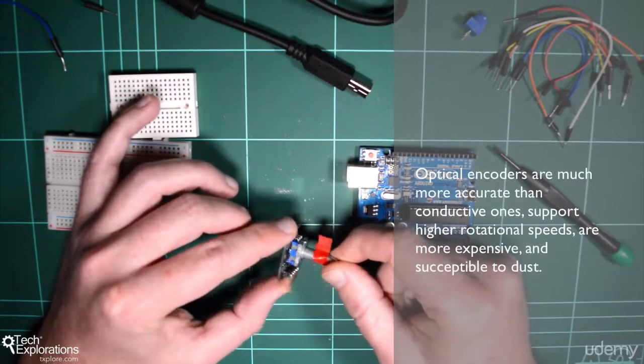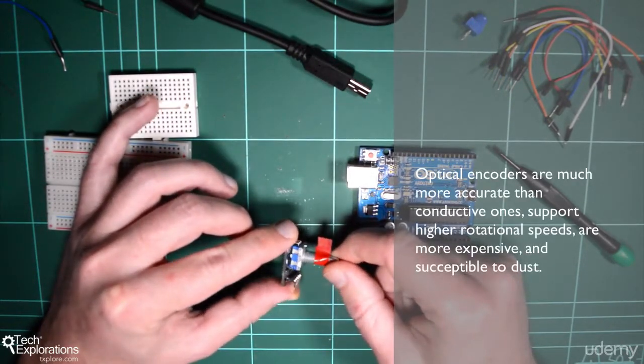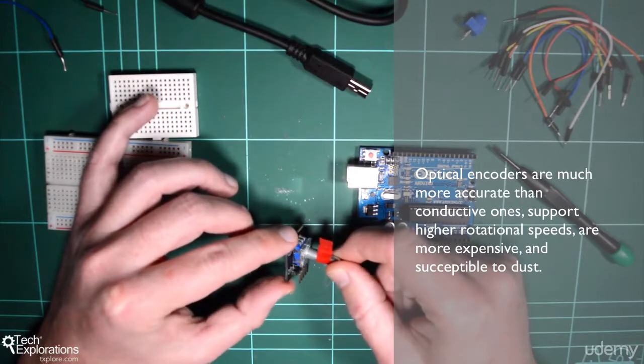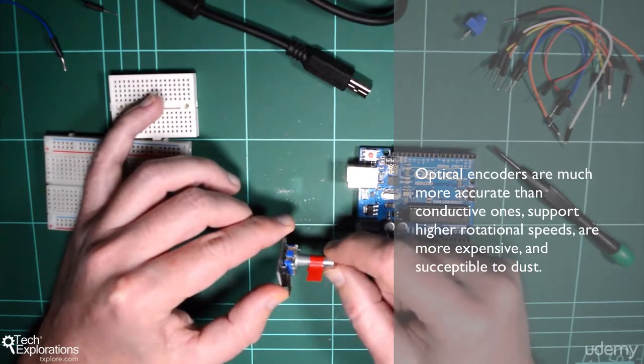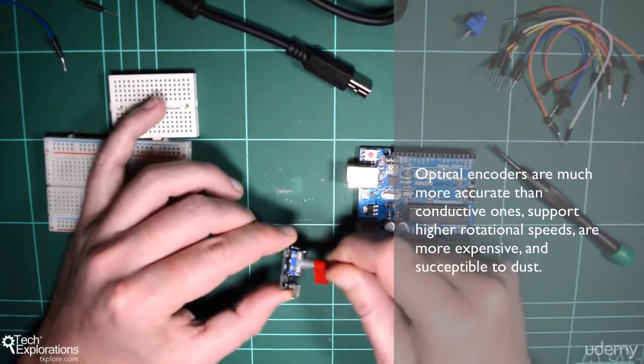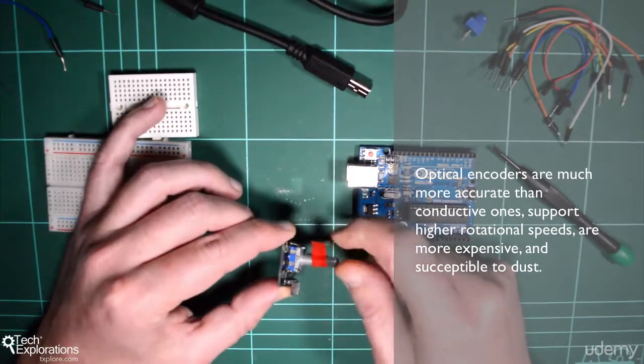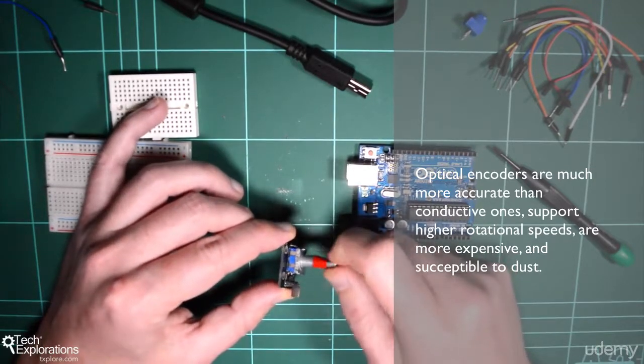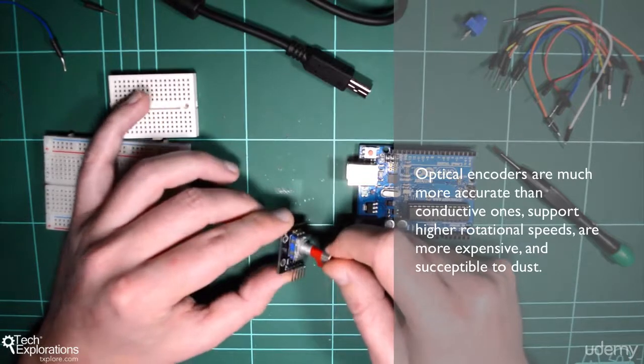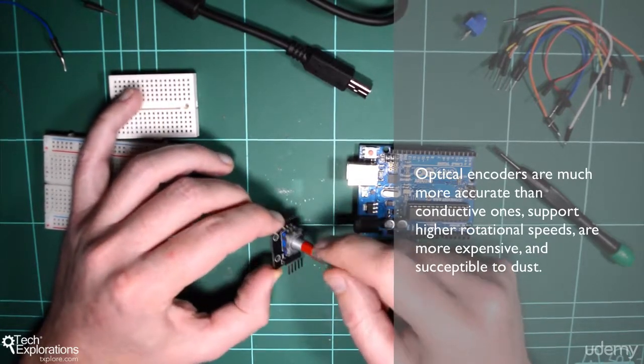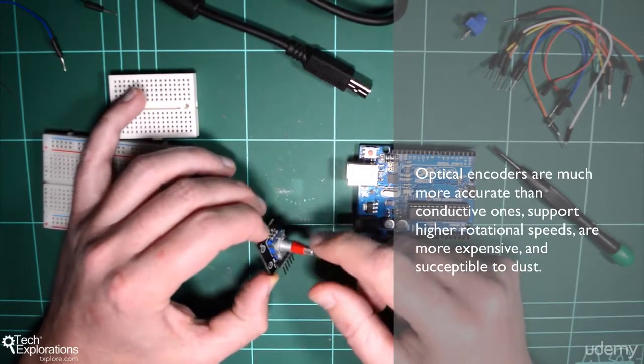The optical type is more expensive, as I said earlier, than the mechanical one, but it offers a lot more accuracy and higher speed. So if you are using it in an application where that knob can turn very, very fast, probably not by human hands, but by some other mechanical apparatus that turns it, then an optical encoder will be more suitable for such an application.